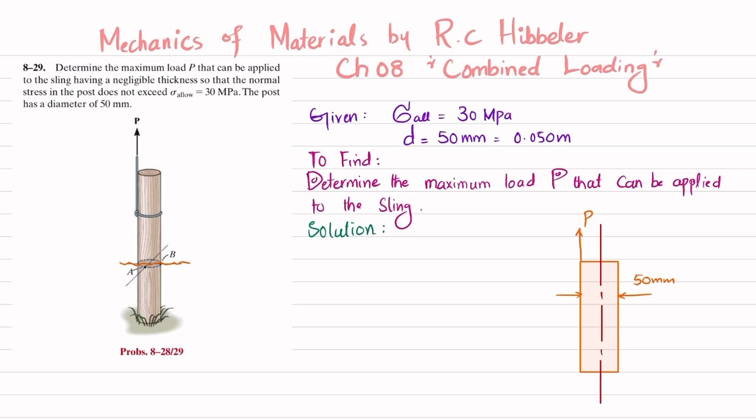So this distance will be equal to 50 divided by 2 which is equal to 25 mm. And when you cut it you will have a shear force, horizontal shear force, there will be a normal force that will act on the center line of this cylindrical post which is N, this is V, and there will be a moment.